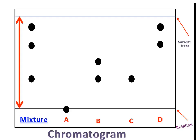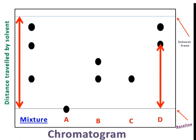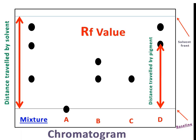The distance traveled by the solvent is measured from the baseline to the solvent front. The distance traveled by the pigment is measured from the baseline to the center of the pigment's spot. There is something called the retention factor (Rf value), which is a specific feature of substances in chromatography — it is the ratio of the distance traveled by the pigment to the distance traveled by the solvent.